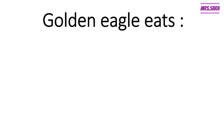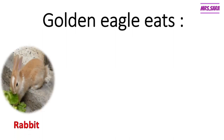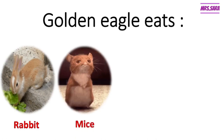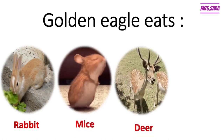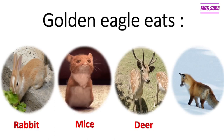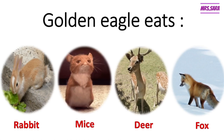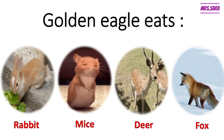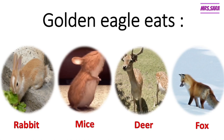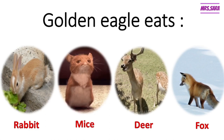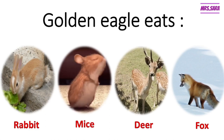What are the prey, or the food, that the golden eagle eats? Number one: rabbit. The golden eagle can catch the rabbit with its talons and eat it with its strong beak. Also mice, deer, and — can you imagine — the golden eagle can catch and carry a fox and eat it with its strong beak!